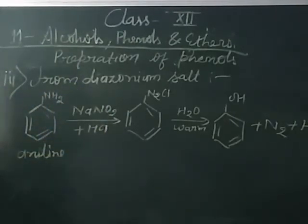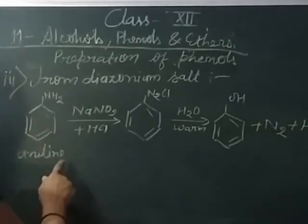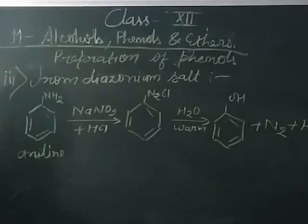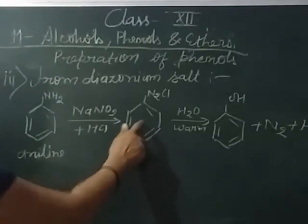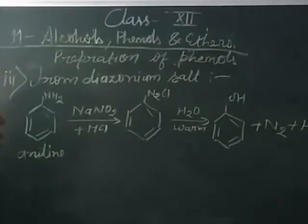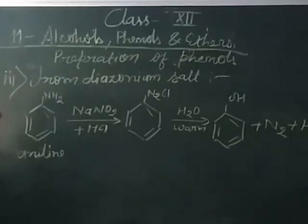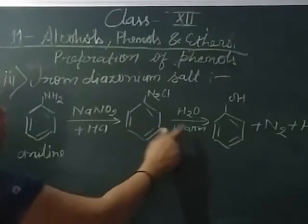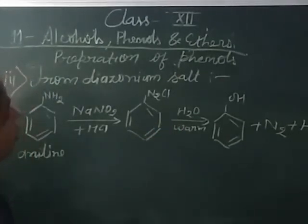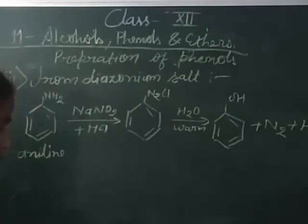To summarize the third process: aniline reacts with nitrous acid, which is the mixture of sodium nitrate and HCl, to form benzene diazonium chloride. When treated with warm water, it converts into phenol and the byproducts are nitrogen gas and hydrogen chloride.